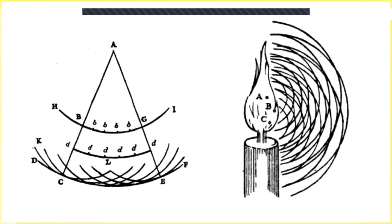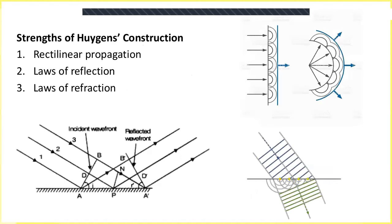This is the diagram from his treatise. You have a point source A that gives a spherical wavefront, and every point on it acts as a secondary source of disturbances, taking the shape of a spherical wavefront. The common tangent to all those spherical wavefronts determines the position of the wavefront at the next instant. This is called Huygens' Principle or Huygens' Construction, and it helps explain rectilinear propagation, as well as the laws of reflection and refraction.